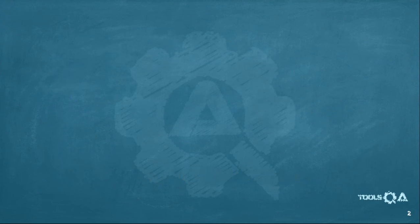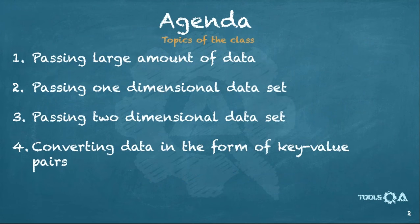In today's class, let me quickly walk you through the agenda. We will be talking about data tables. The first thing we will learn is how to pass a large amount of data. The second thing is passing a one-dimensional data set, which means one column and multiple rows. Then we will talk about passing a two-dimensional data set, and then interpreting data in the form of key-value pairs.